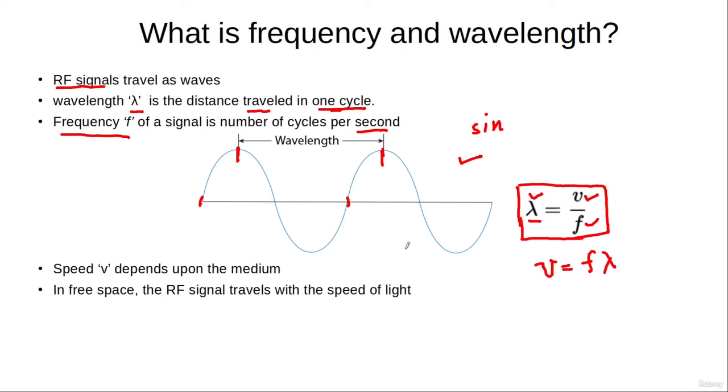Now the speed with which a wave travels depends upon the medium. For example, when talking about the RF signal, if this RF signal is traveling through the free space where there is no electric or magnetic field, then this RF signal will travel with the speed of light. But if this RF signal is traveling underwater, then the speed of this RF signal would decrease.